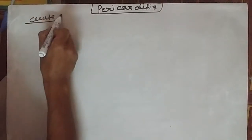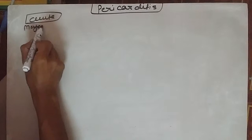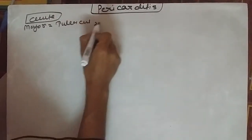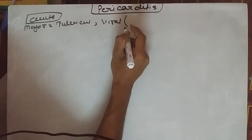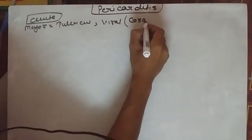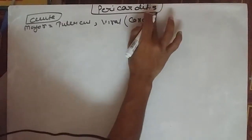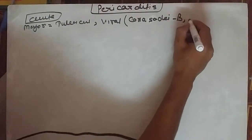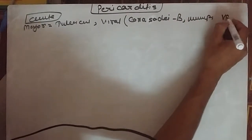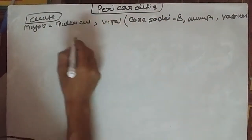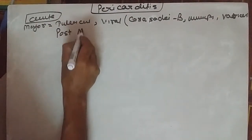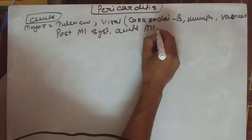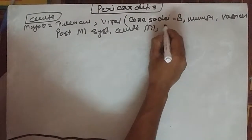What is the cause behind acute pericarditis? The major cause is tuberculosis. It can be due to viral causes, and the most common virus associated with pericarditis is coxsackievirus, coxsackie B species, mumps, and varicella virus. Other causes include post-myocardial infarction syndrome in acute MI, and the majority of pericarditis is idiopathic.